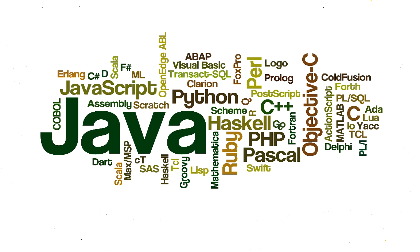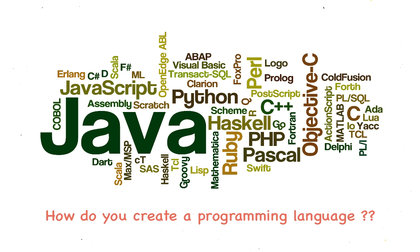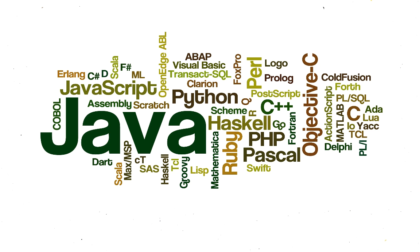If you're watching this video, you must be some type of programmer, or you may be interested in programming. You may see languages like C, Java, Python, and hundreds of others, and you may have wondered at some point how do you create a programming language? We're going to answer that question here, and also build our own system that analyzes the declaration section of a C program.